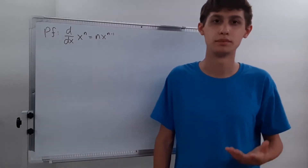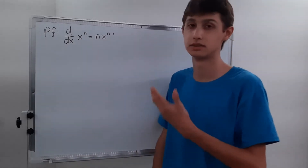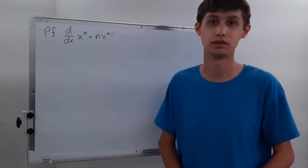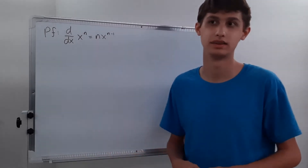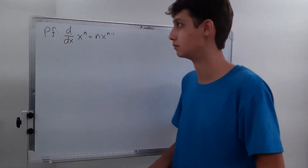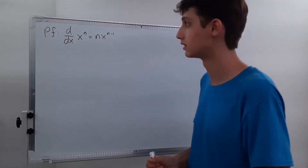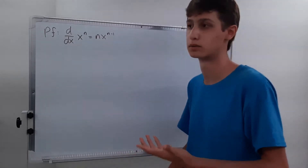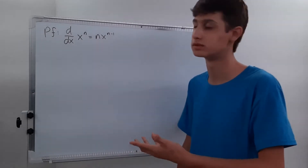Today we're going to prove the power rule for the derivative, which states that the derivative of x to the n is equal to nx to the n minus 1 power, where n is any constant like 5, 10, or pi. We're differentiating with respect to x, and since we're proving the power rule, we can't use the power rule to find our answer.